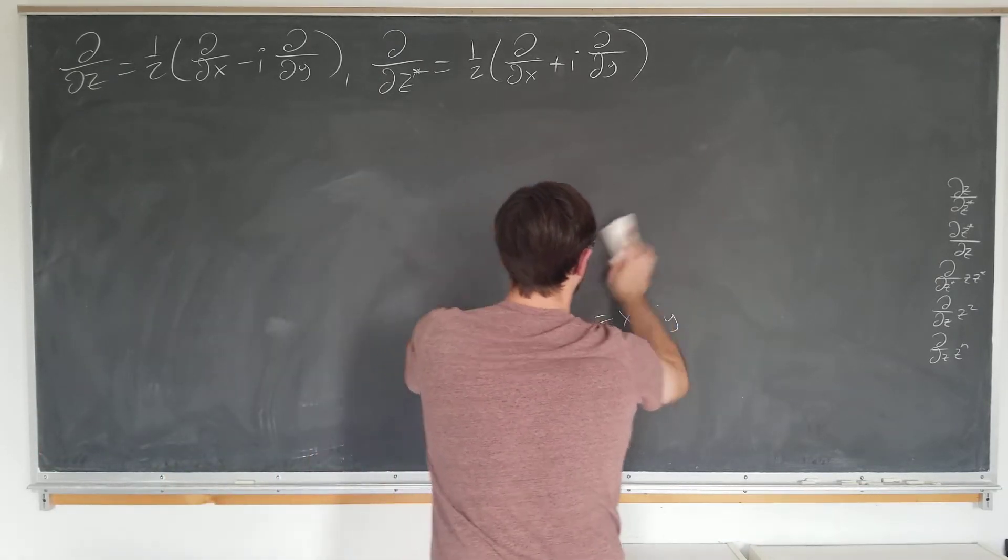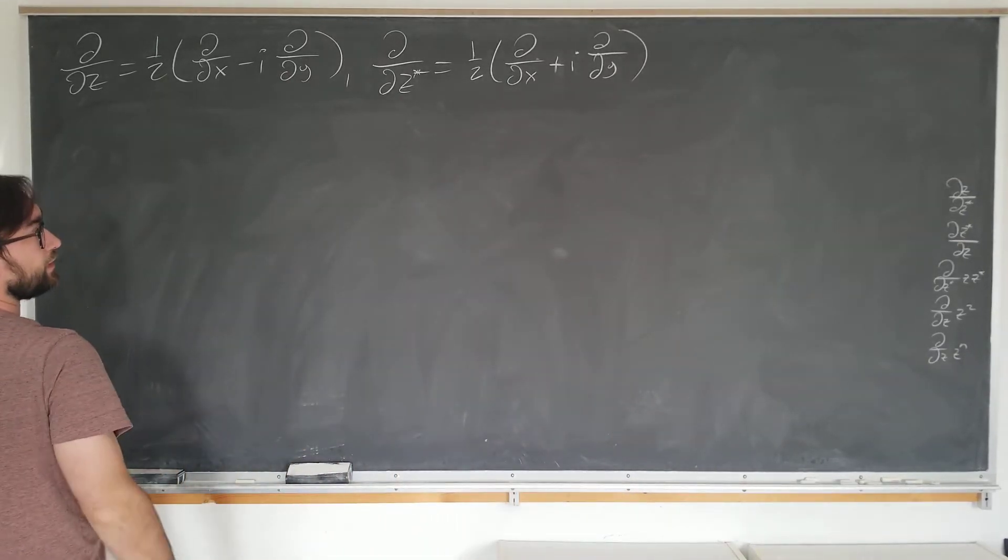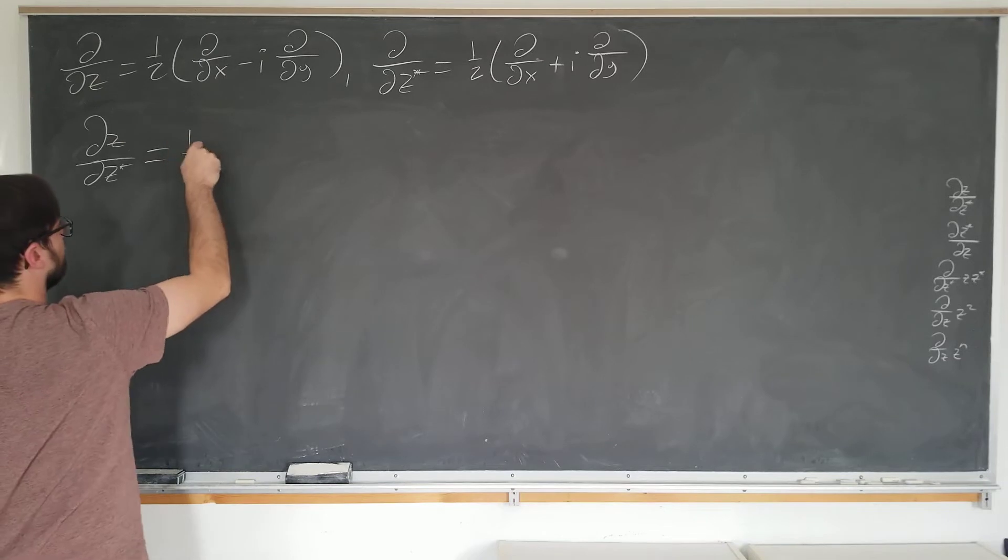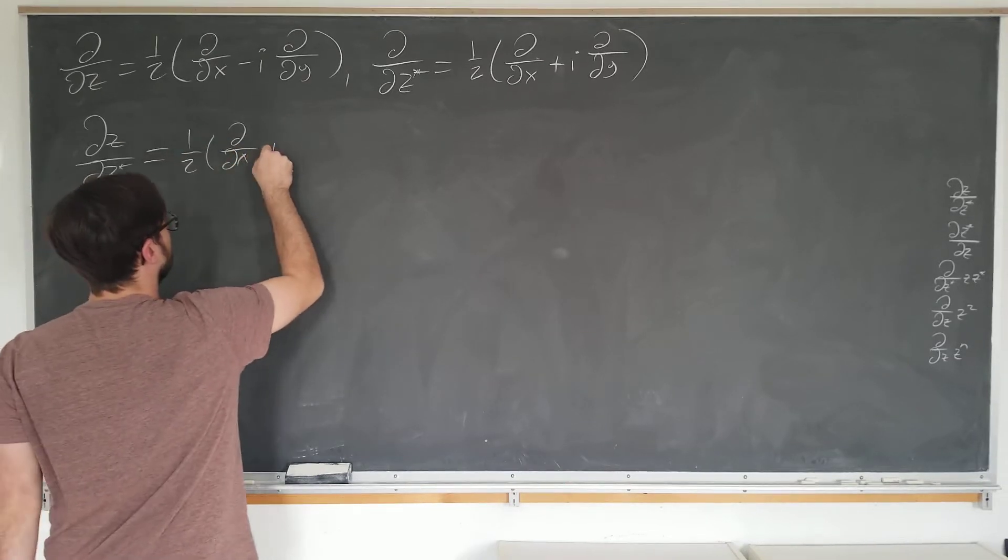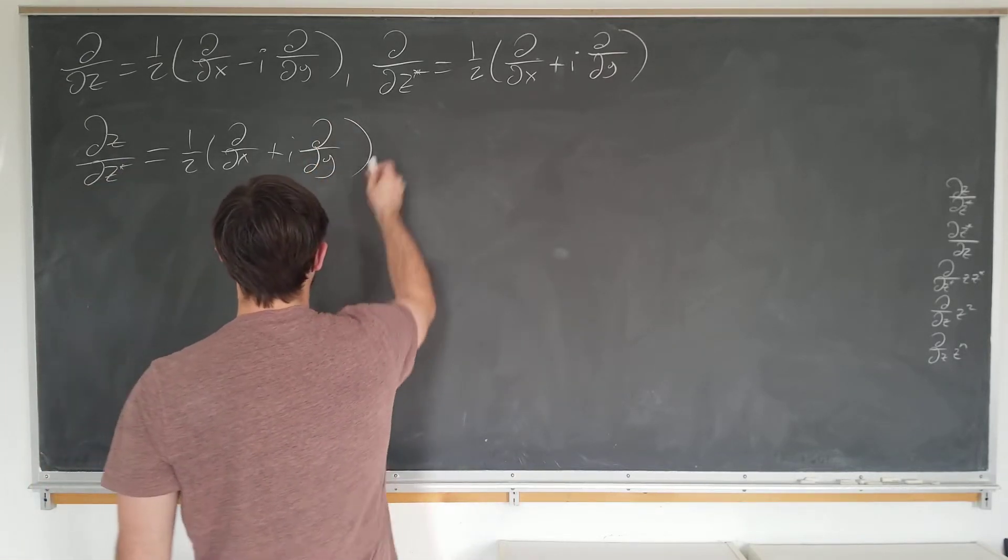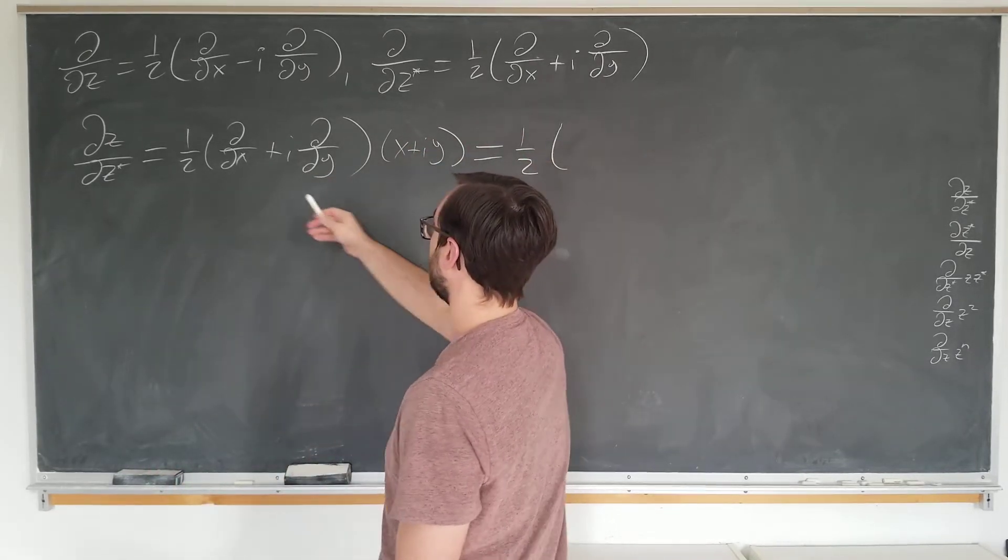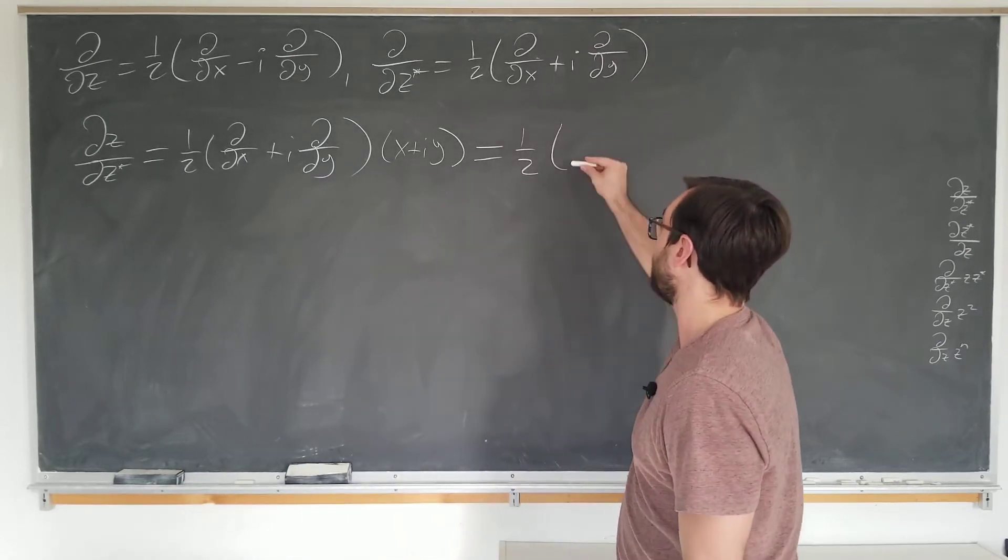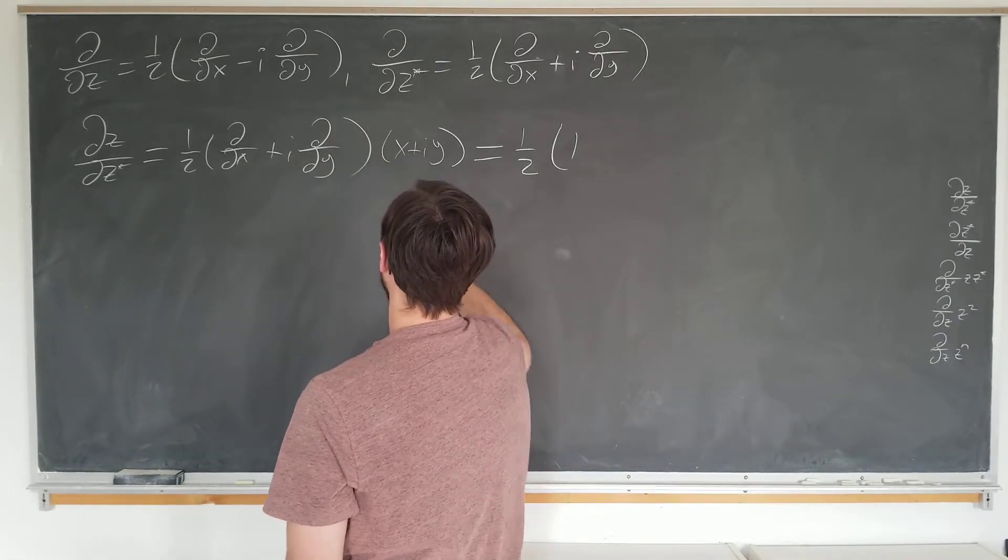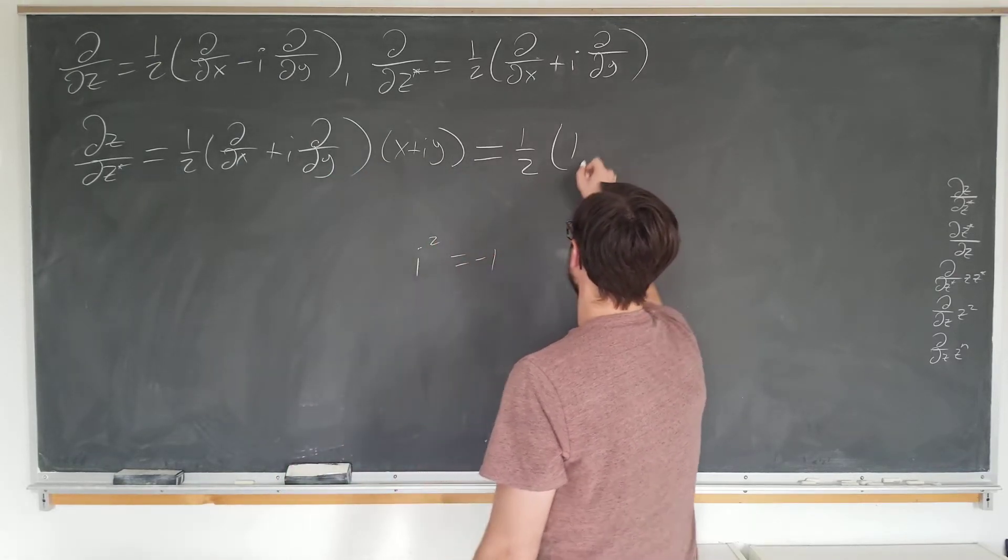All right, we are now going to start with the case of dz by dz star. We use the formula that we have here: one half d by dx plus i d by dy, the dz star operator acting on z, simply x plus i y as I mentioned earlier, becomes one half. The x operator acting on x is one, operating on y is zero, and the i dy operator acting on x is zero, but we have i squared dy by dy which is one. This is minus one over four of course.